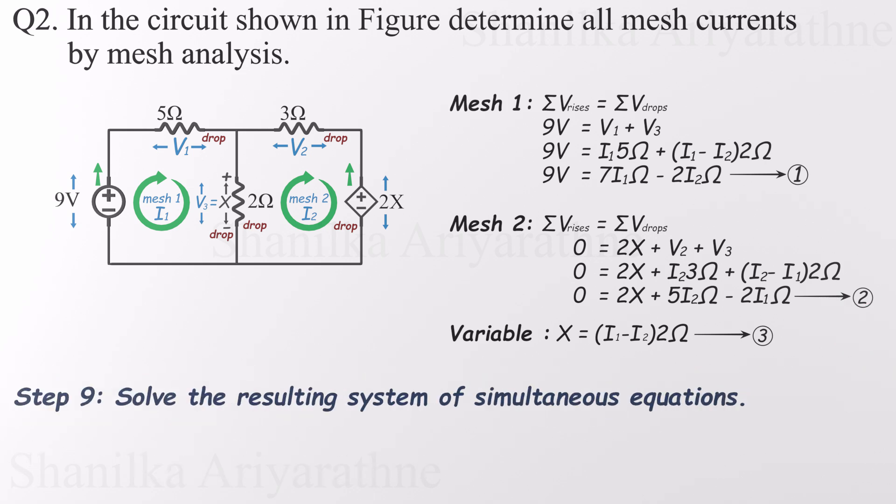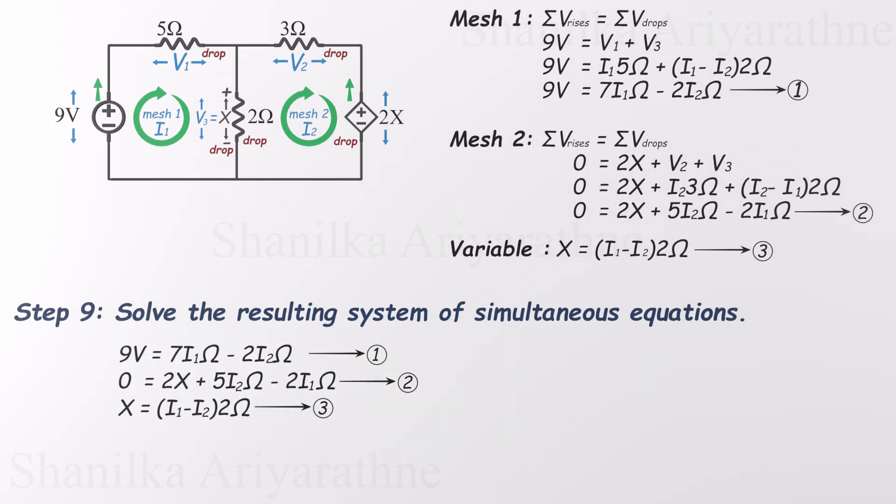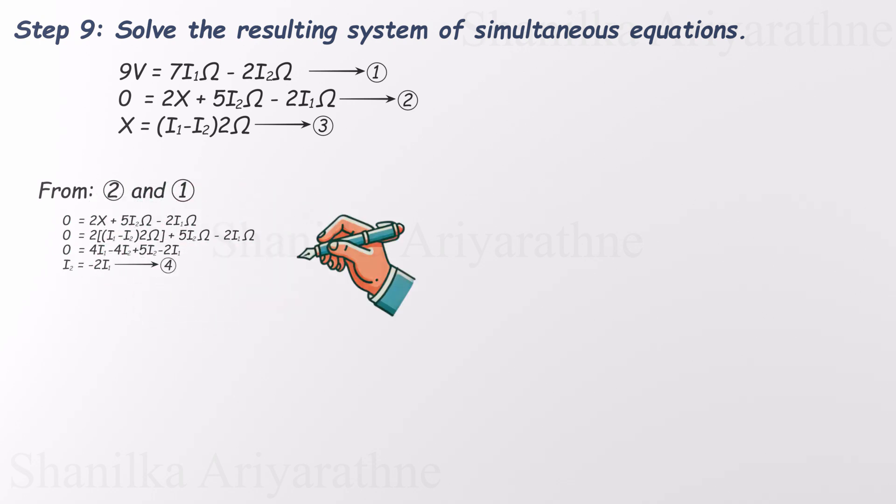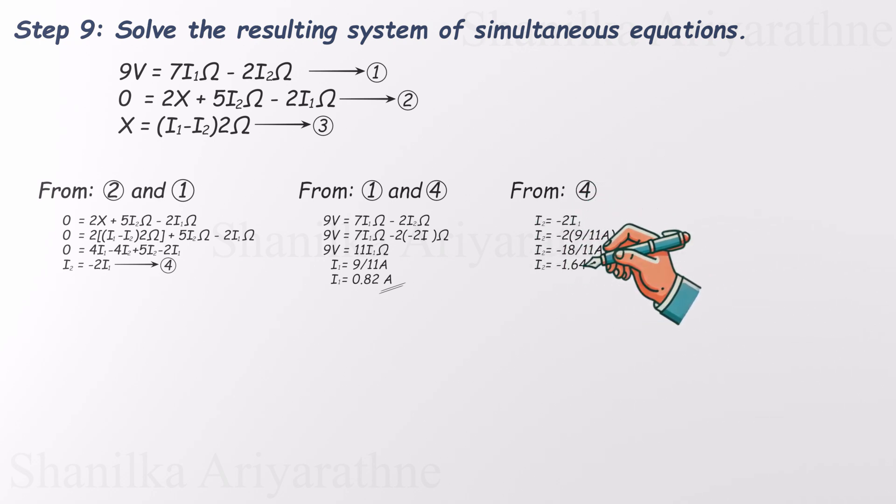Finally, it's time to solve the simultaneous equations and find the mesh currents. First, I'll substitute the expression for X into equation 2. From that, we get a new relationship. I2 is negative 2I1. That's our fourth equation. Now I'll plug this I2 expression back into equation 1, replacing all I2 terms with minus 2I1. Solve that, and we get I1 is 0.82 amperes. With I1 known, we substitute it back into our fourth equation, and that gives us I2 is negative 1.64 amperes. And just like that, we've found the mesh currents.